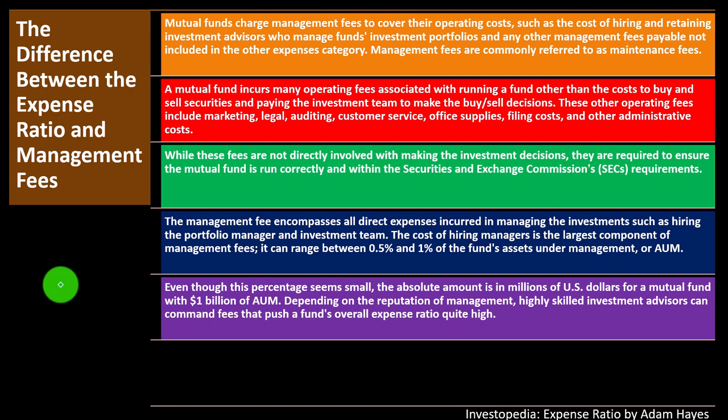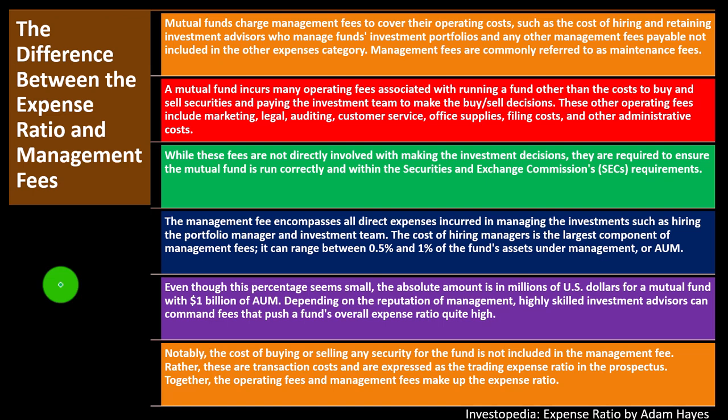The management fee encompasses all direct expenses incurred in managing the investments, such as hiring the portfolio manager and investment team. The cost of hiring managers is the largest component of management fees and can range between 0.5% and 1% of AUM. Even though this percentage seems small, the absolute amount is in the millions for a fund with $1 billion in AUM. Highly skilled investment advisors can command fees that push a fund's overall expense ratio quite high. Notably, the cost of buying or selling securities is not included in the management fee — these are transaction costs expressed as the trading expense ratio in the prospectus.